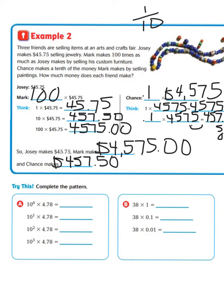Now we're going to do a little bit more practice — we're going to do the first two together and then you're going to do the last two on your own. So, 10 to the power of 0 times 4 and 78 hundredths — we know that 10 to the power of 0 equals 1, so 1 times 4.78 equals 4.78. Then 10 to the first power times 4.78 — we move one place value to the right — equals 47.8. The exponent tells you how many place values to move your decimal point.